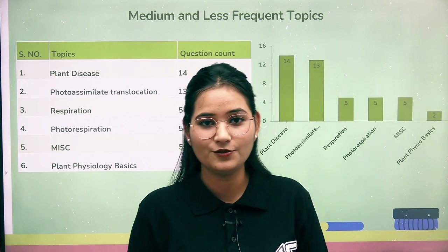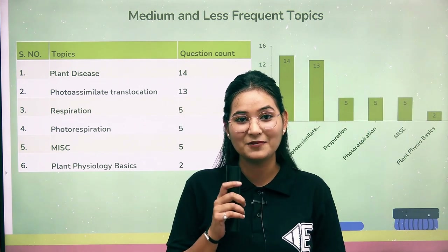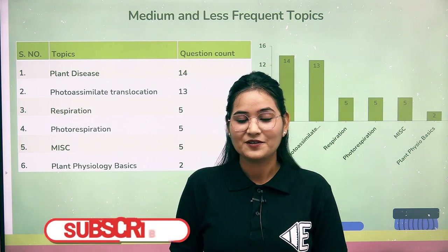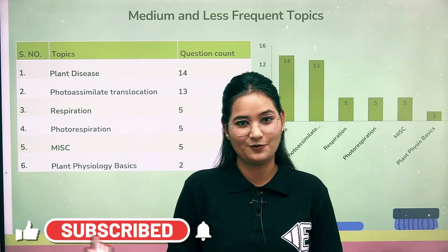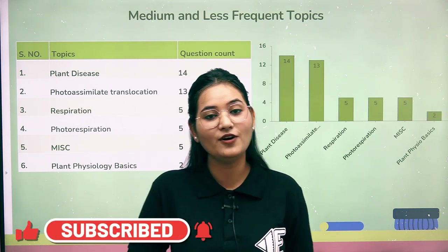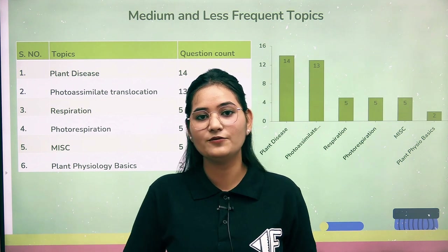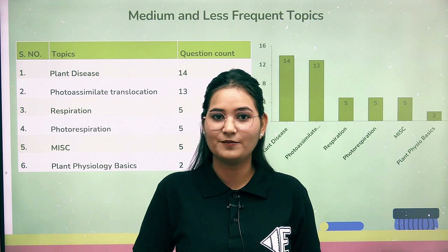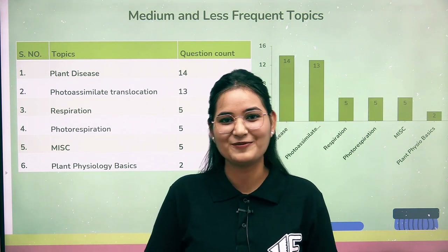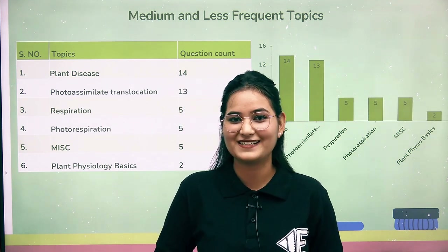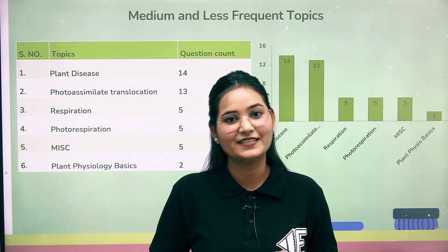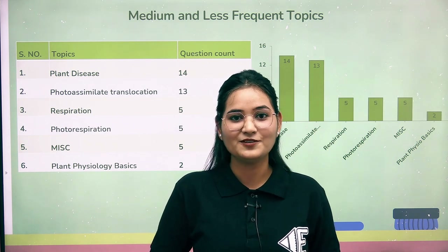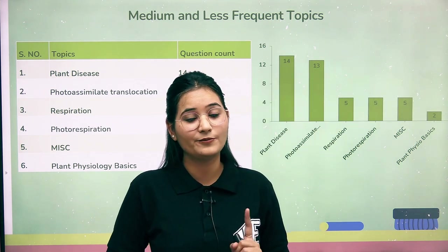Regarding miscellaneous concepts — in every video I mention questions that span more than two topics, and we group those as miscellaneous. So in total, you have 8 high-frequency topics and 6 medium-frequency topics, giving you 14 topics to prepare. First target the high-frequency topics, then move to the medium and less frequent ones. Note them all down and start preparation.